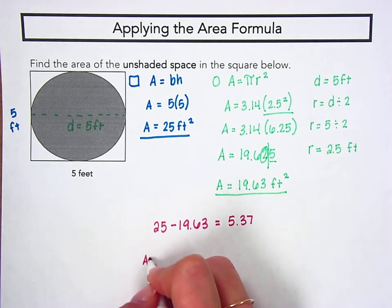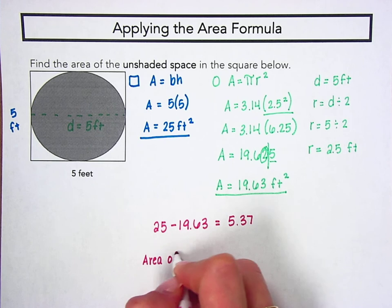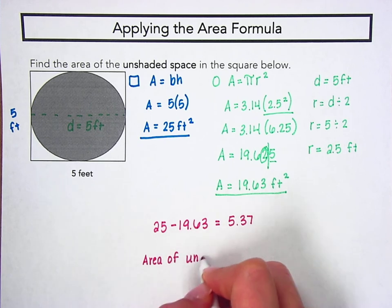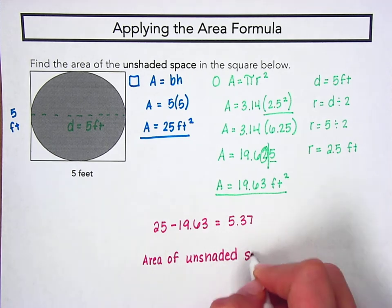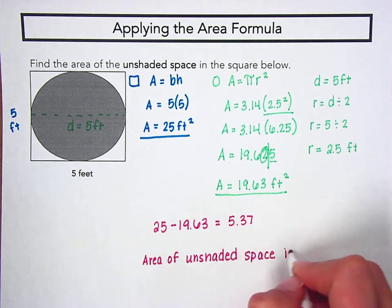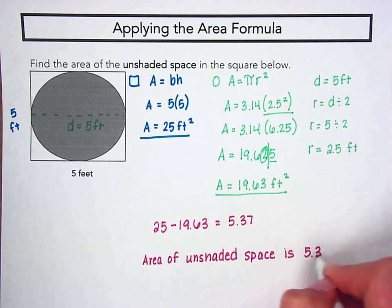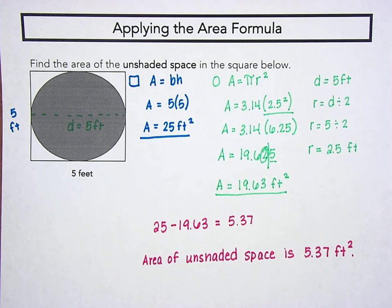So, the area of the unshaded region, or the unshaded space, is 5.37 square feet. Hopefully, that helps answer any of the questions that you guys had. Keep an eye out for more videos to come.